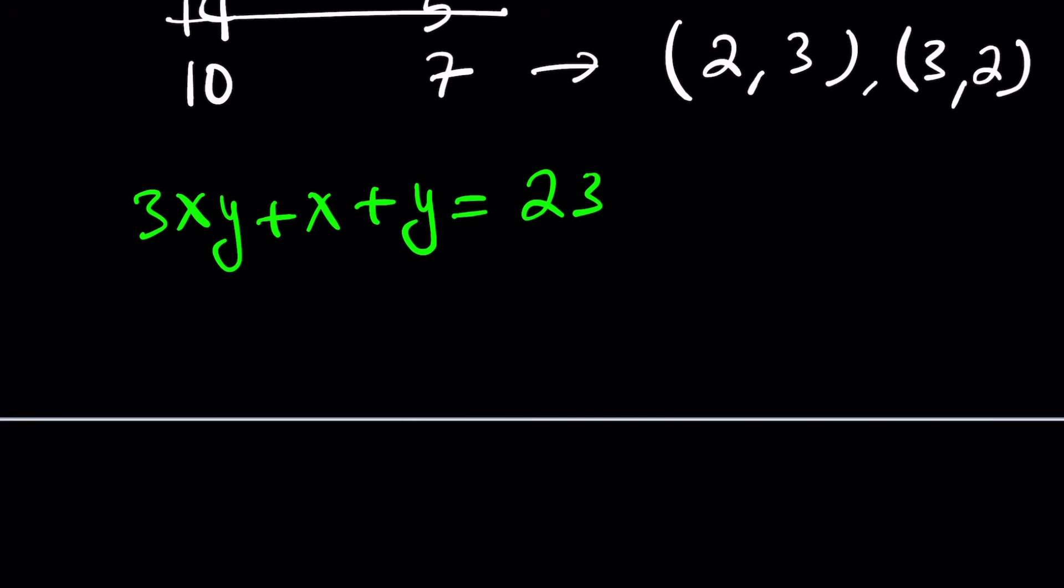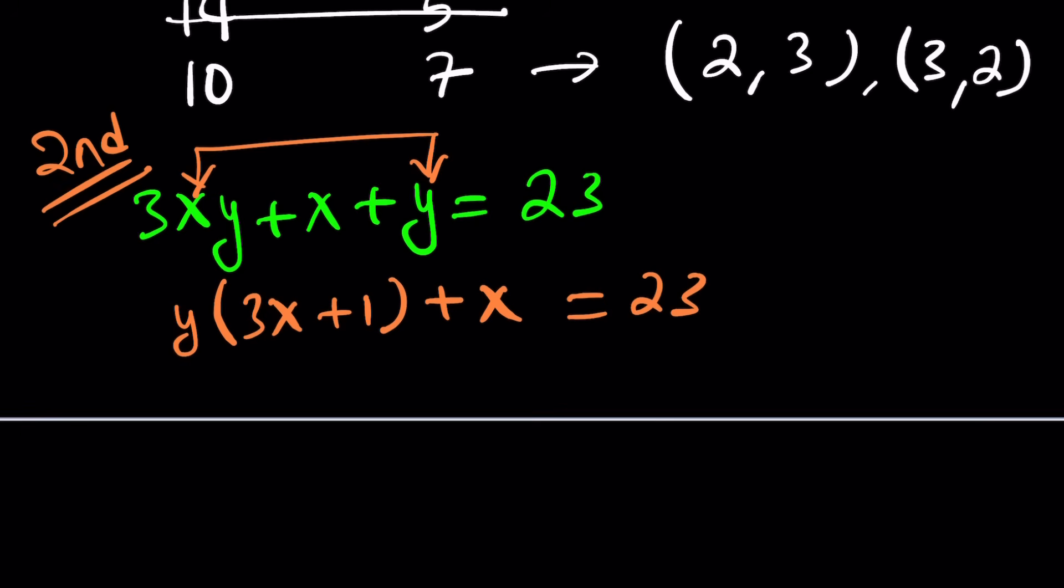Another thing I can do is try to isolate one of the variables because in Diophantine equations, sometimes if you can write one variable in terms of the other, it's helpful. In this case, it doesn't matter which one I choose, but I'd like to go with y. I take out a y here. That gives me 3x plus 1, plus x equals 23. And now at this point, I'm not going to just add something to both sides like I did with the first approach because this is the second method. So it's supposed to be different.